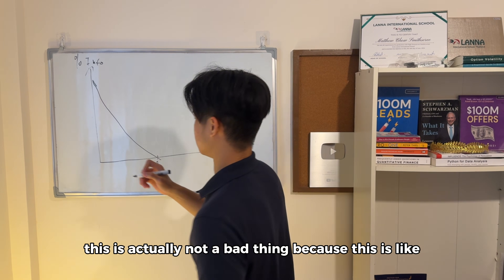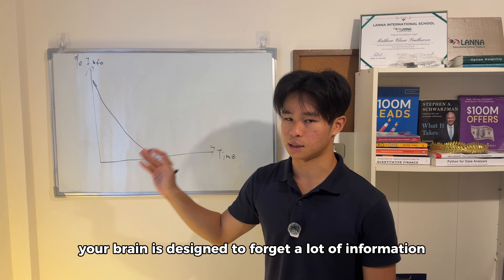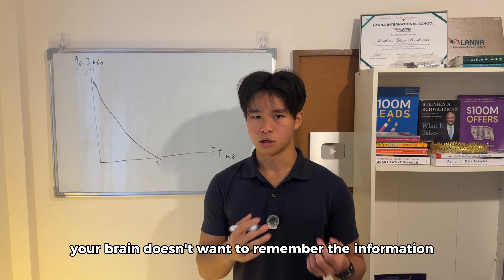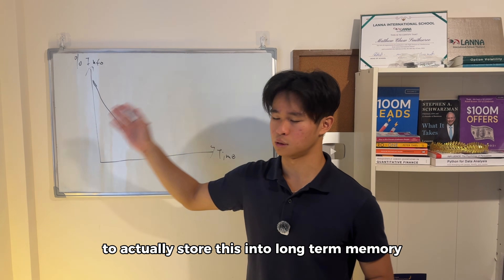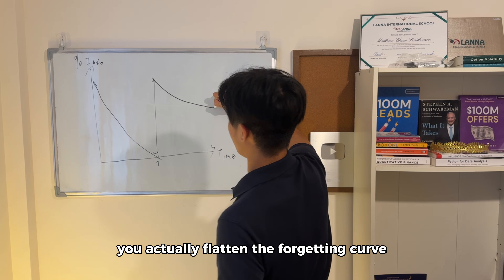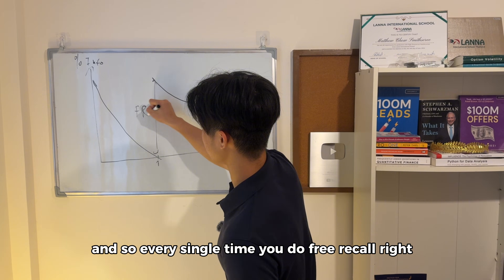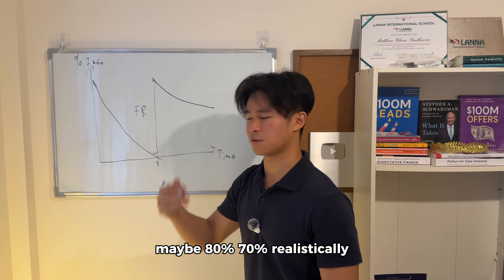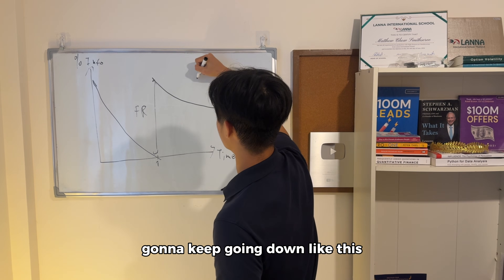The thing is, this is actually not a bad thing — it's a biological mechanism. Your brain is designed to forget a lot of information very fast. If the information is not actually important, your brain doesn't want to remember it or use its mental resources to store it into long-term memory. But every single time you test yourself, you actually flatten the forgetting curve. And so every single time you do free recall, you're actually able to remember more — maybe 80% or 70% realistically — and then the forgetting curve just keeps flattening.